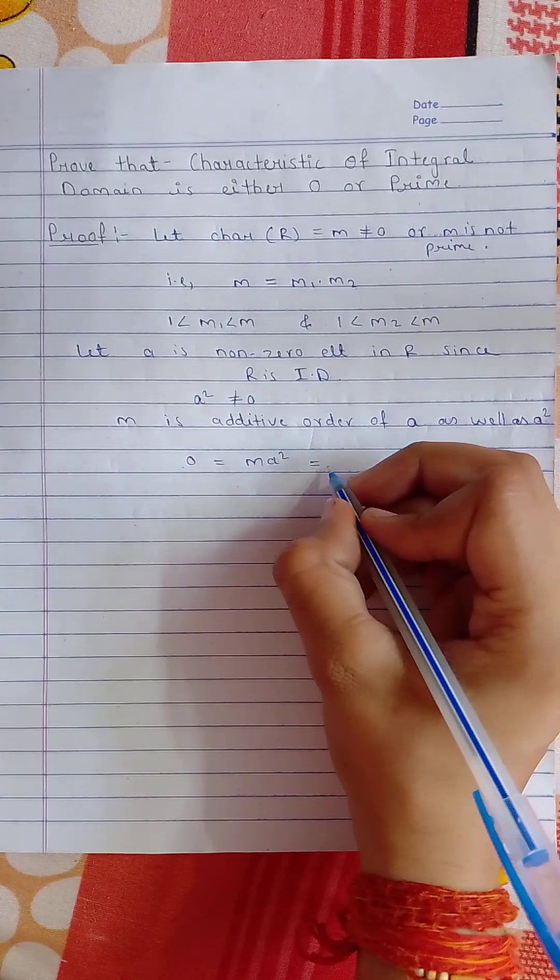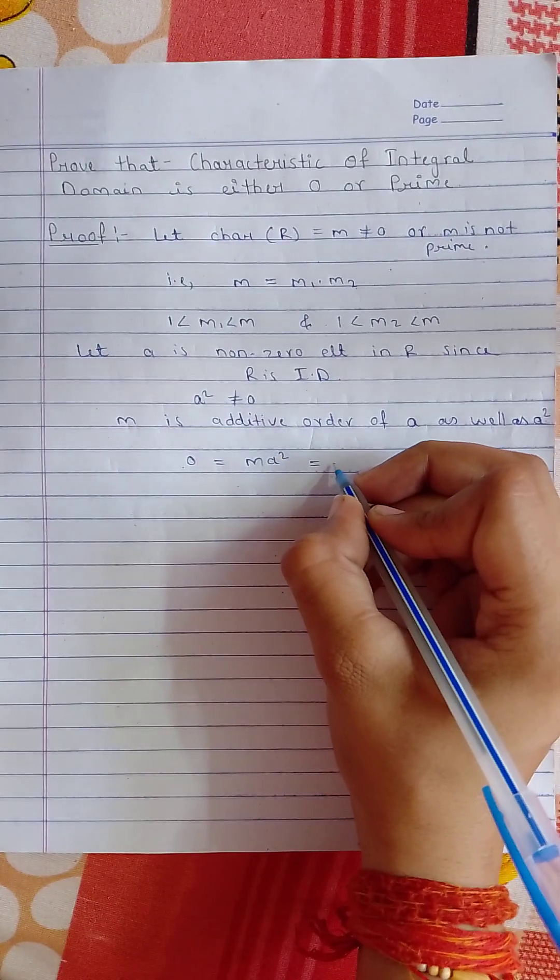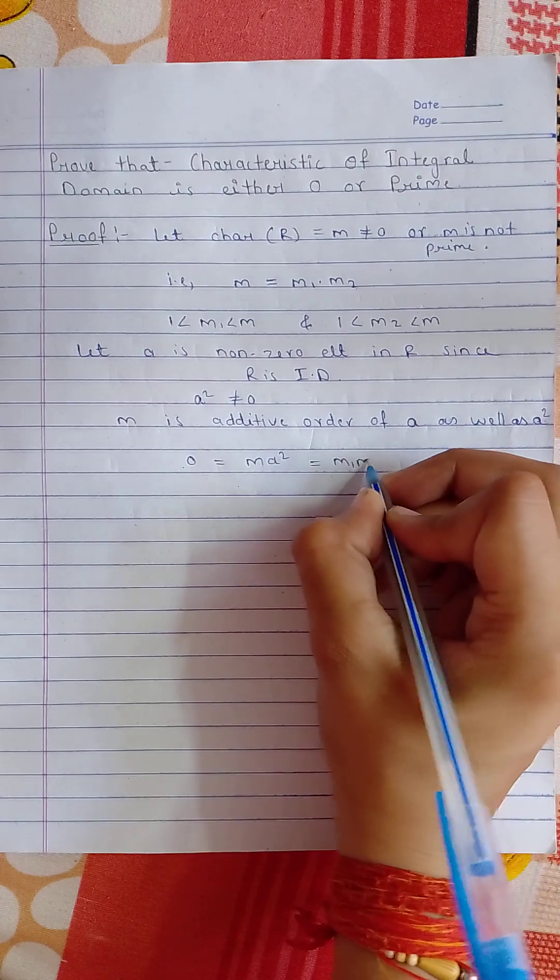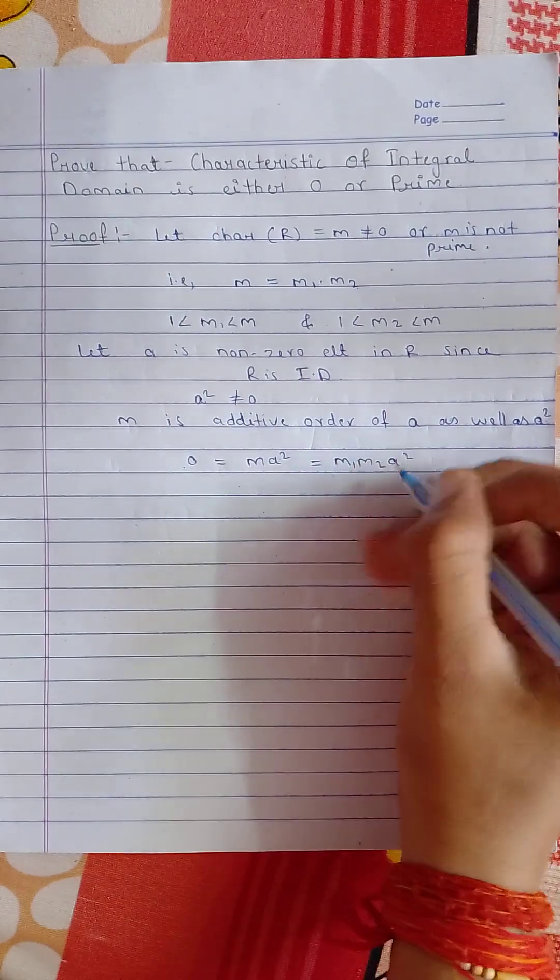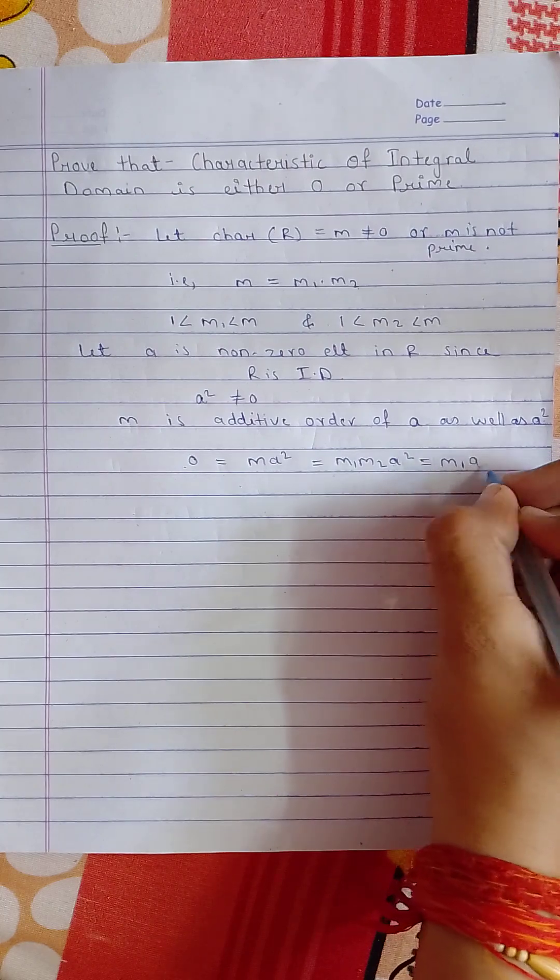So we can write this, and in place of m we can write m1 times m2 times a squared.